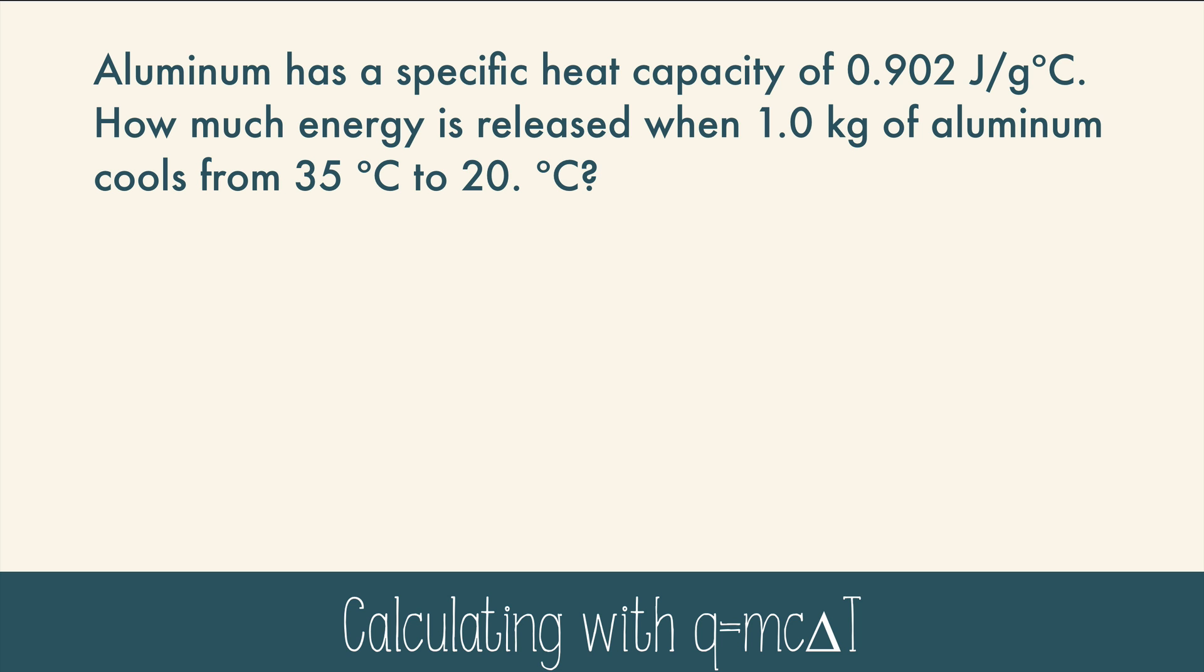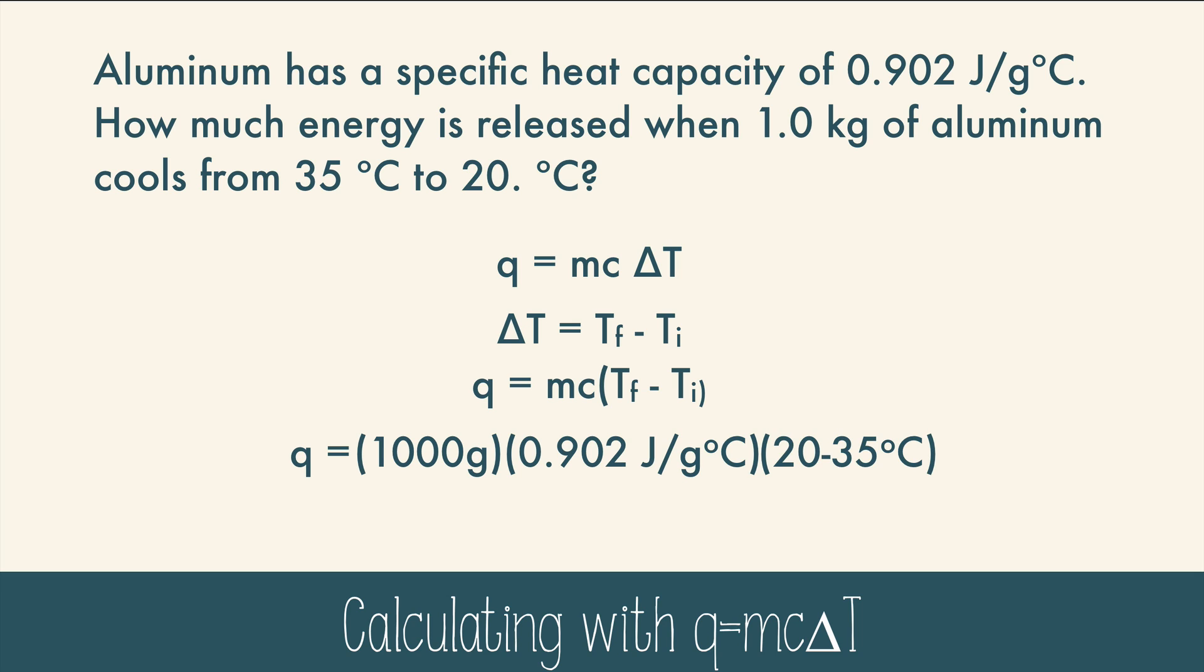Let's see a situation where we would use it. Aluminum has a specific heat capacity of 0.902 joules per gram degree Celsius. How much energy is released when 1 kilogram of aluminum cools from 35 degrees Celsius to 20 degrees Celsius? We're going to use q equals mc delta t. The delta t really means the final temperature minus the initial temperature. So we can substitute that information into the equation. The mass is 1000 grams. The specific heat is 0.902 joules per gram degree Celsius. The final temperature was 20. So it's 20 minus 35, which will give us a negative number. And that negative is significant. Grams cancel. Celsius cancels. Our final answer is negative 13,500 joules. The negative number means that heat is being released. This is exothermic. And that is consistent with what the problem stated earlier.